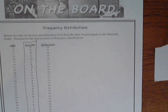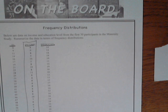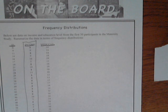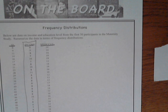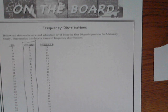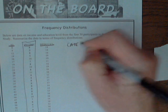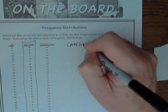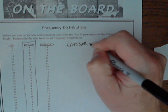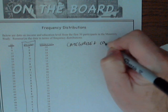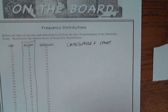A frequency distribution summarizes the data by categorizing the different levels or numbers that we have, and then counting the frequency — counting how many we have. We categorize and count when we are making a frequency distribution.